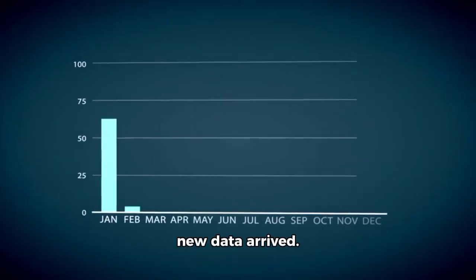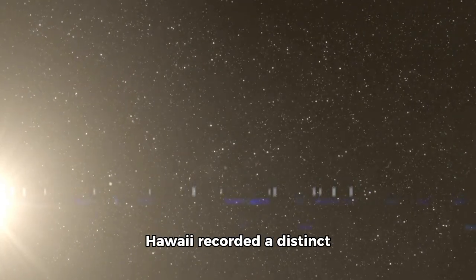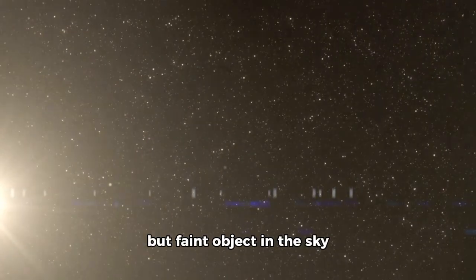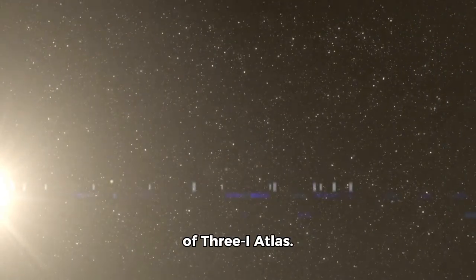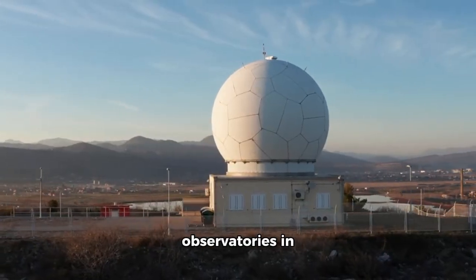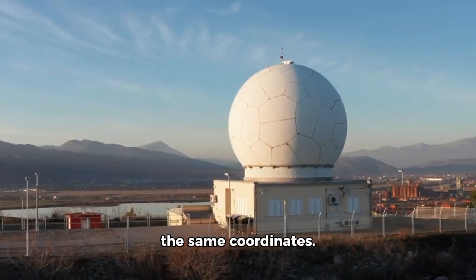Several weeks later, new data arrived. The Pan-STARRS array in Hawaii recorded a distinct but faint object in the sky, millions of miles from the most recent known route of Three-I Atlas. Within moments, observatories in Chile, Spain, and South Africa confirmed the same coordinates.